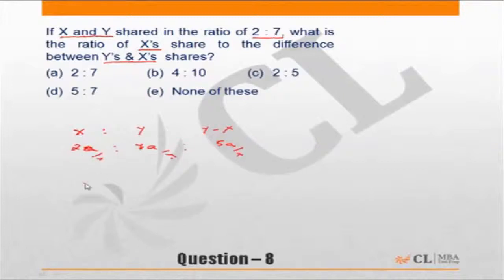You could have straight away said X is to Y is to Y minus X. If X is to Y is 2 is to 7, that means the difference will be 5 units, 7 minus 2, so it is nothing but 5. So 2 is to 7 is to 5, or the ratio in this particular case would have been 2 is to 5.